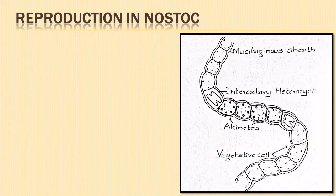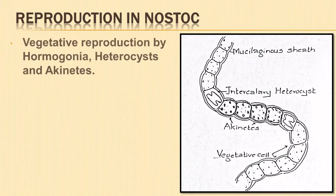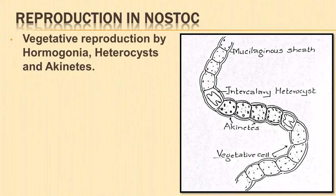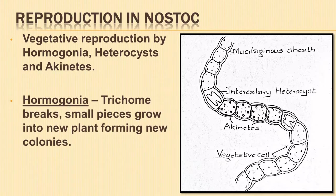Let us understand the different modes of reproduction in Nostoc. Vegetative reproduction in Nostoc occurs with the help of hormogonia, heterocysts, and akinetes. The trichome generally breaks at a number of places and the small pieces are called hormogonia. This may be due to the death and decay of an ordinary cell, or the trichome may break where a heterocyst is united with a vegetative cell. They move out of the mucilaginous sheath and grow into a new plant, forming new colonies.